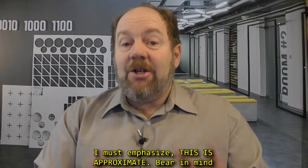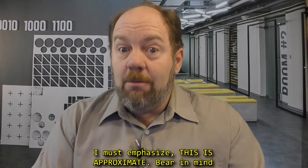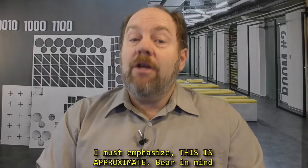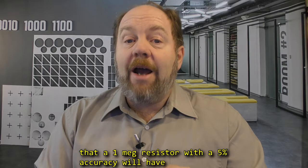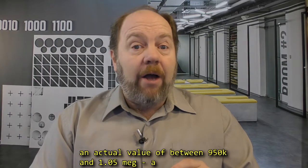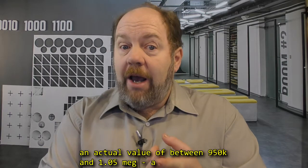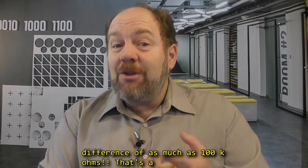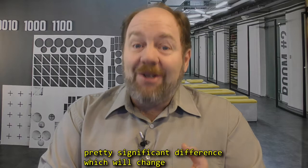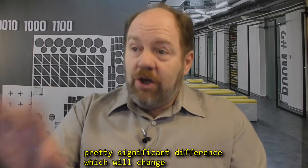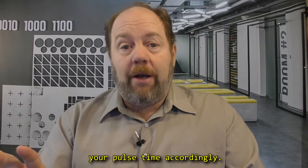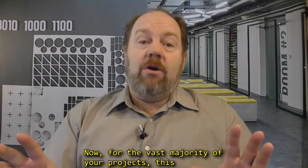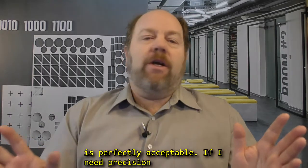Now I must emphasize, this is approximate. Bear in mind that a 1 meg resistor with a 5% accuracy will have an actual value of between 950k and 1.05 megaohms, a difference of as much as 100,000 ohms. That's a pretty significant difference, which will change your pulse time accordingly. Now for the vast majority of your projects, this is perfectly acceptable.